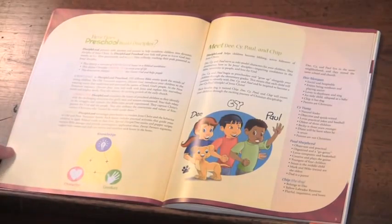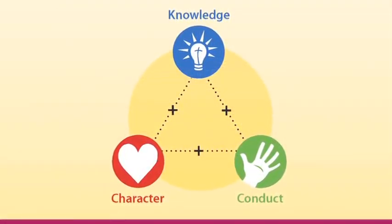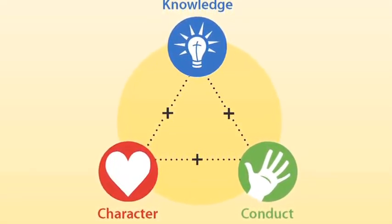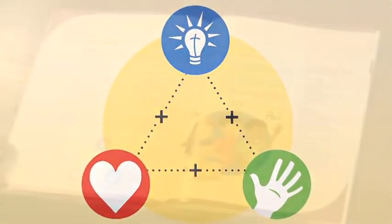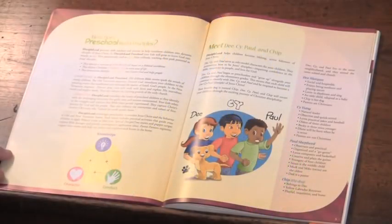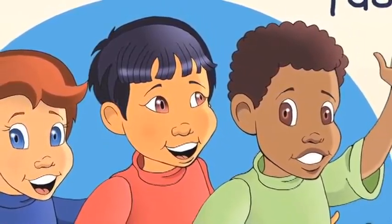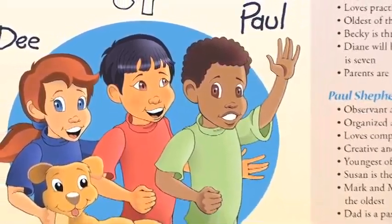Pages four and five introduce you to how we build disciples in preschoolers — the knowledge we want them to gather, the character we want to develop, and the conduct we'd like to see as a result of using DiscipleLand's preschool curriculum. On page five, you see our characters, DiscipleLand and their dog Chip. They are the role model characters for our preschool children throughout the unit, and they will actually do the life application of the Bible time story.